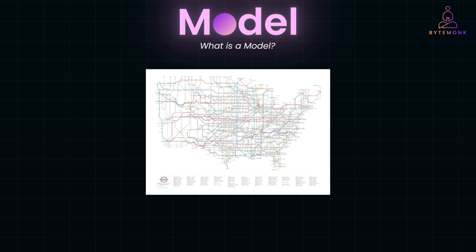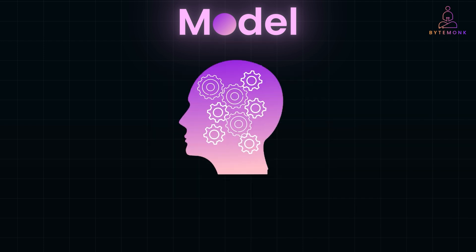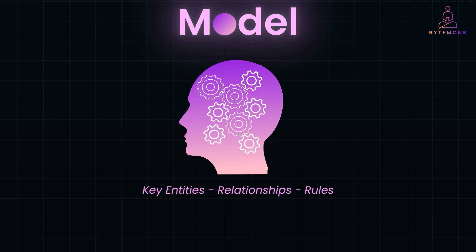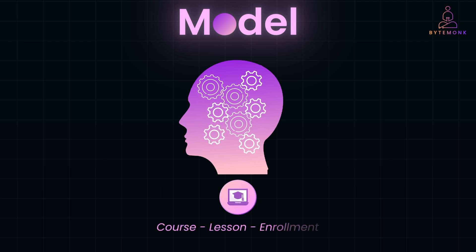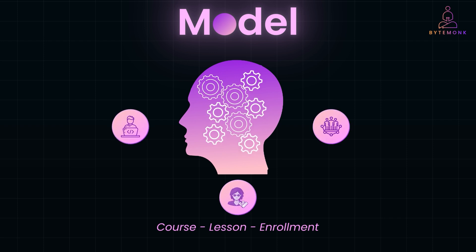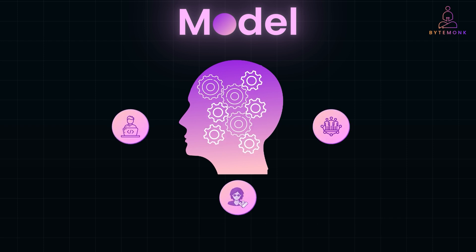When we develop a ubiquitous language, we are creating a shared way to talk about the business domain. This language becomes the foundation of the model. It reflects how domain experts think and work, highlighting key entities, relationships, and rules that define the system. For example, if you are building a system for managing online courses, the model might include terms like 'course,' 'lesson,' and 'enrollment.' Everyone on the team — engineers, designers, and product owners — uses the same terms, so there is no confusion and everyone stays aligned.